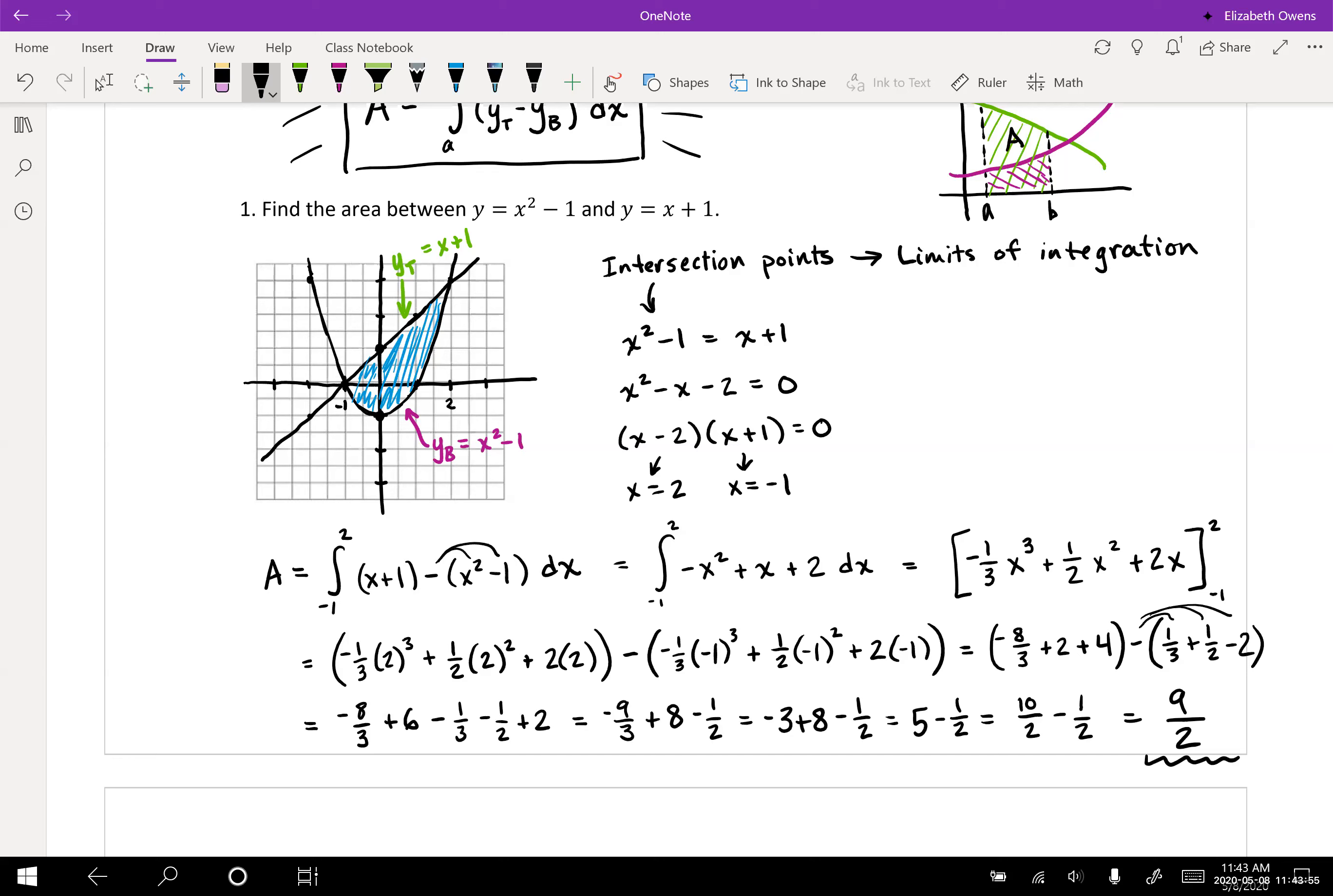That's the area, the total area enclosed between those two curves. Now one thing to note here is that this nine halves is not actually net area. It's total area between those two curves. So if something is below the x-axis here, it's not actually counting as negative. This is like area as if you were measuring a floor in a living room.